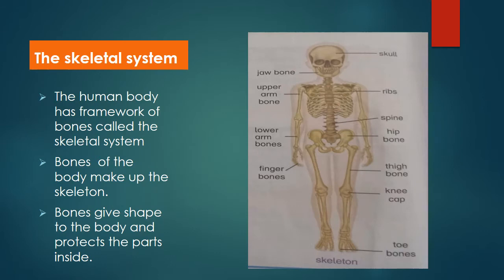First we will discuss the skeletal system. The human body has a framework of bones — bones ka dhancha hotta hai. There are many bones in the body. You have studied earlier that the hard parts in the body are called bones. Bones give shape to the body. All the bones in the body make up the skeleton — this is the skull.